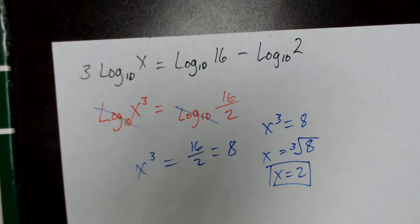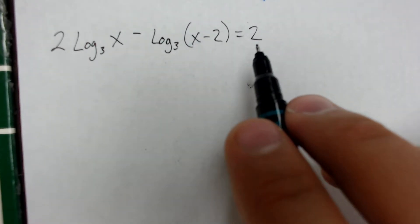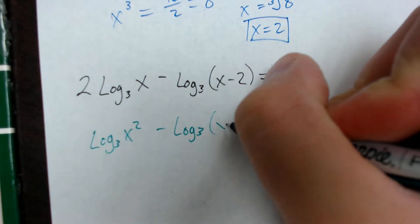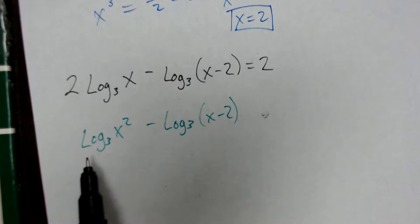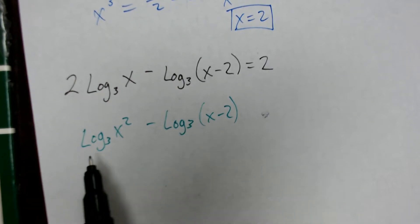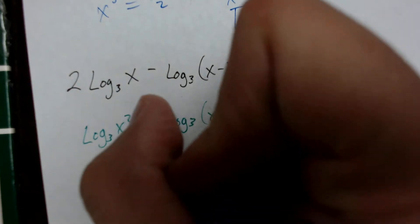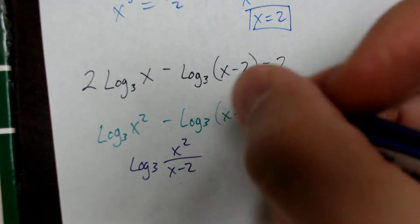Let's do one more example. In this next problem, both rules are applied on the same side of the equation, and our equation equals a whole number instead of another logarithm. We'll apply the exponent rule first, rewriting it as log base 3 of x squared minus log base 3 of (x minus 2). Note I'm not applying a division rule to x minus 2 because it's in parentheses — it's one number. I will use the division rule on the two different logarithms being subtracted, giving log base 3 of x squared over (x minus 2), all equal to 2.